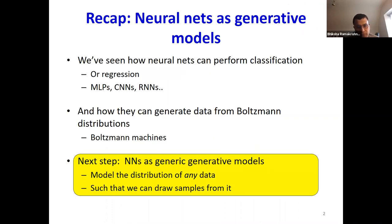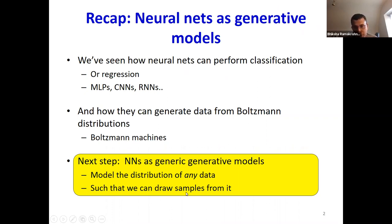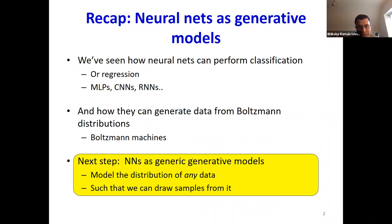Here's a quick recap of what we saw in the last class. In the previous lectures, we saw how neural networks can perform classification and regression tasks, how they can generate data from Boltzmann distributions, and then we began the series of two lectures on variational autoencoders, where neural networks are considered as generic generative models which can model the distribution of pretty much any kind of data, such that we can draw samples from these data.